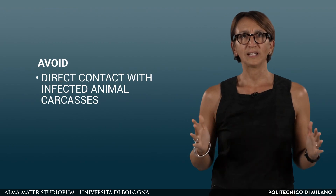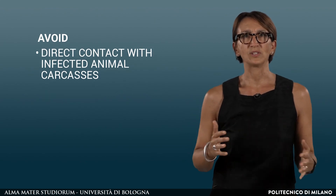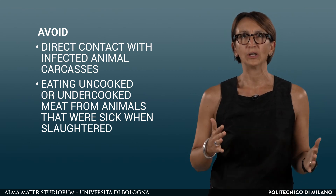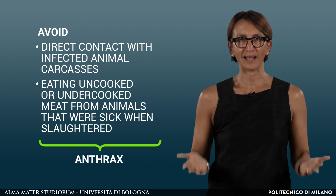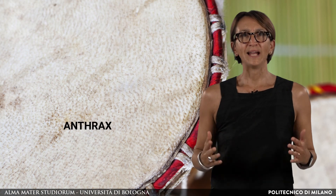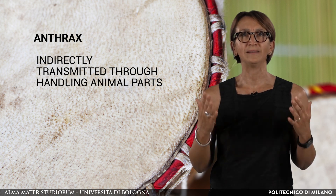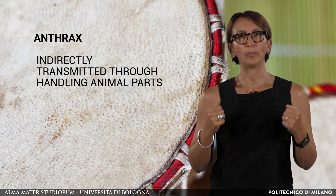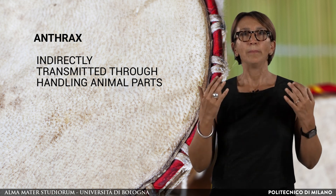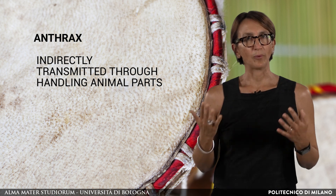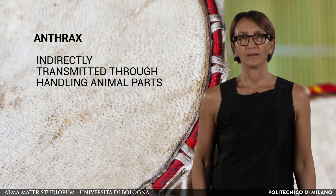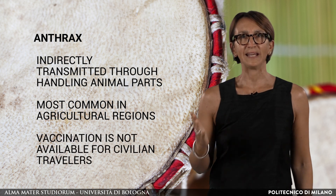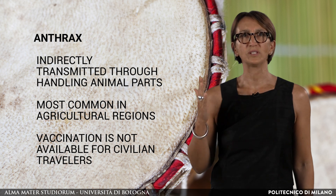Avoid any direct contact with infected animal carcasses or eating uncooked or undercooked meat from animals that were sick when slaughtered, as you may become infected with anthrax. Anthrax may also be indirectly transmitted through handling animal parts such as hides, or products made from animal parts, meaning that souvenirs made from animal parts may be dangerous. Anthrax is most common in agricultural regions, and vaccination against anthrax is not available for civilian travelers.